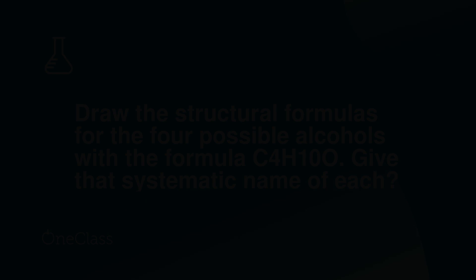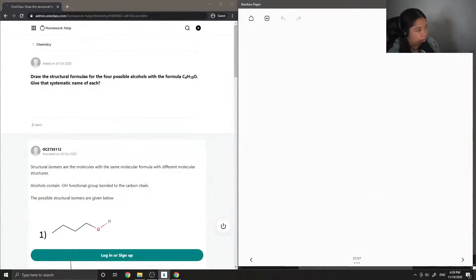Question 4 asks for the formulas of the four possible alcohols with the formula C4H10O. Give the systematic name of each.